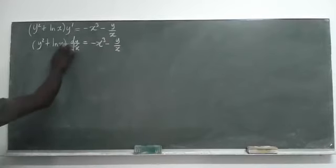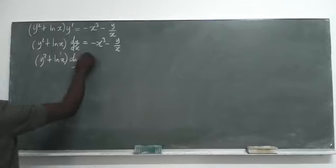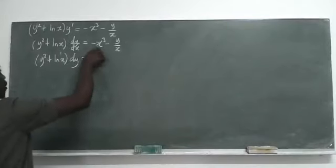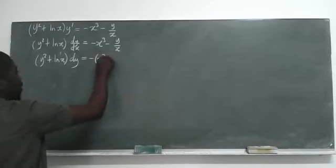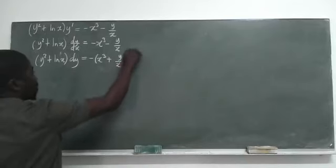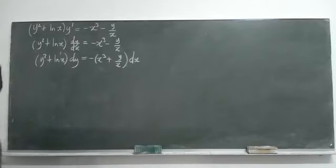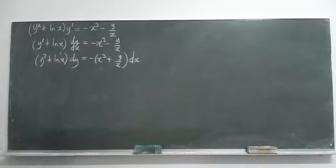Now I want to take the dx component to the other side and remain with the bracket and dy. I will have y squared plus ln(x) dy equal to, factoring out minus, x cubed plus y over x, multiplied by dx. Taking dx to this side and equating everything to zero.